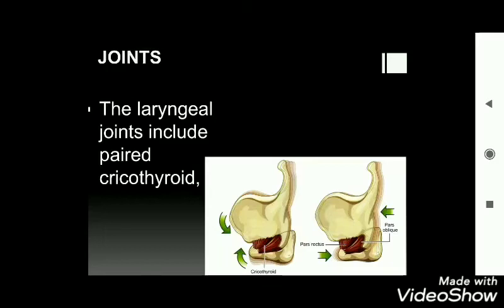In the previous class we covered the skeletal framework of the larynx. This class we are going to see the joints, ligaments, membranes, blood supply, nerve supply, and some clinical aspects of the larynx.